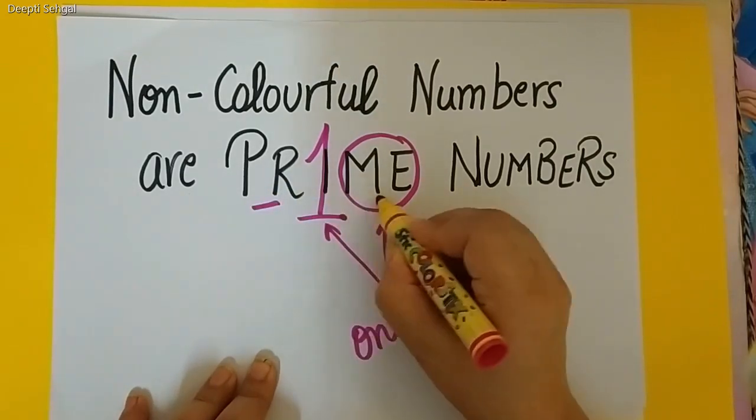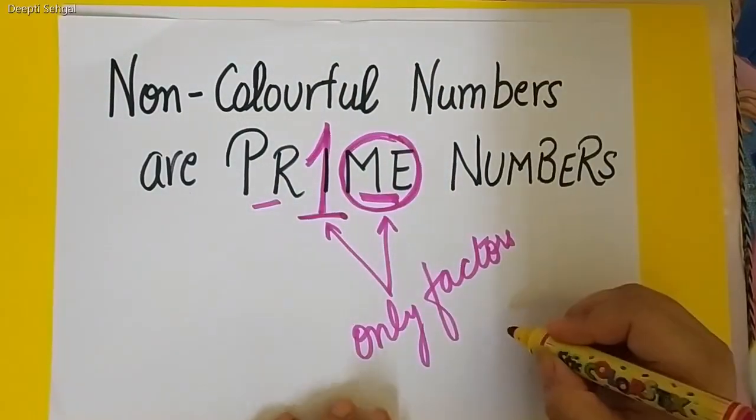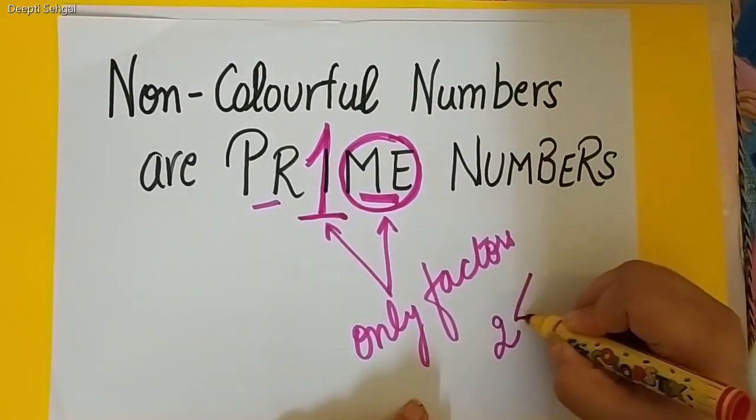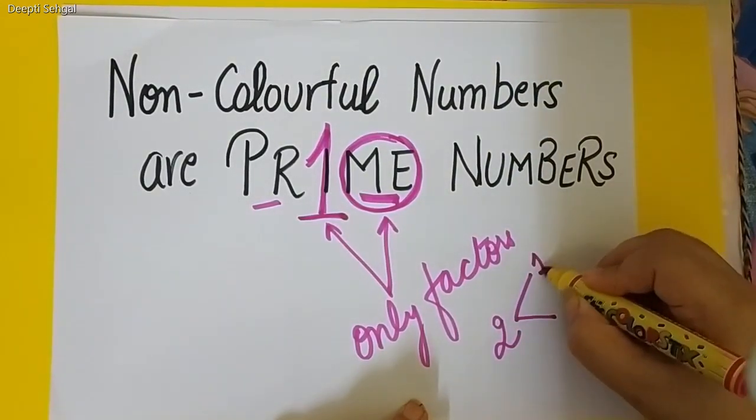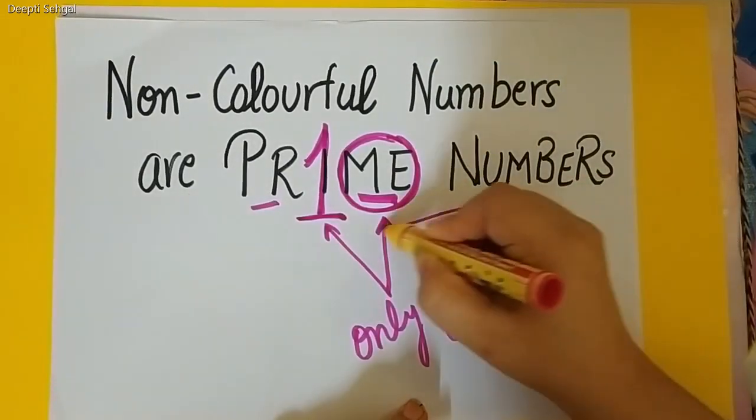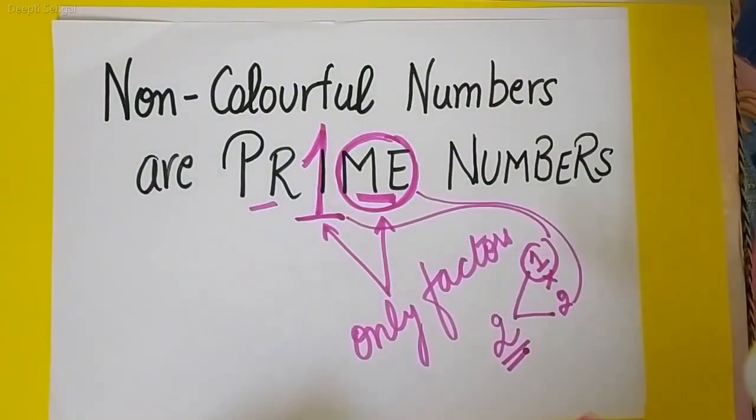Prime number only thinks about himself. Example, take the number 2. 2 has only two factors. 2 comes in the table of 1 and 2. 1 multiply by 2. So, 1 is 1 and the other is 2. The number itself. So, 2 is a prime number.